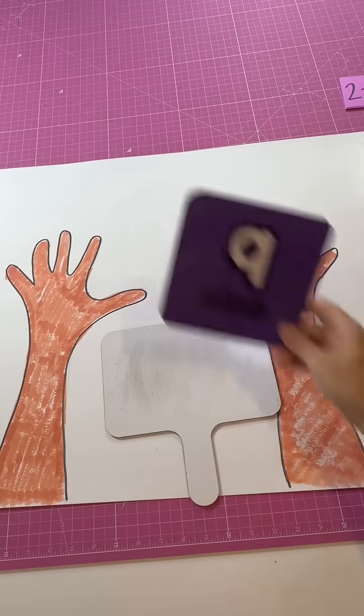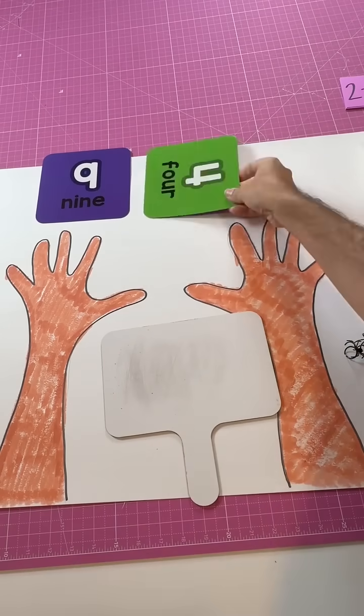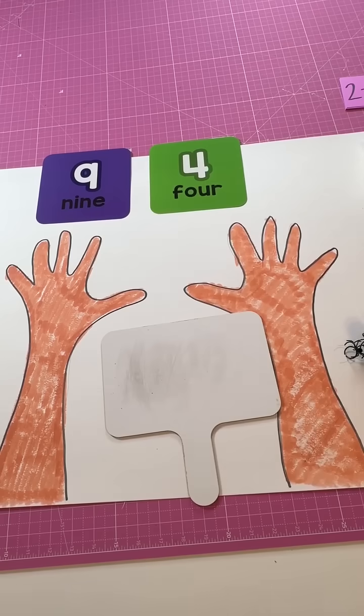Let's use our spider rings to subtract. So I'm going to use these number cards. So how many spider rings do we need? Nine.